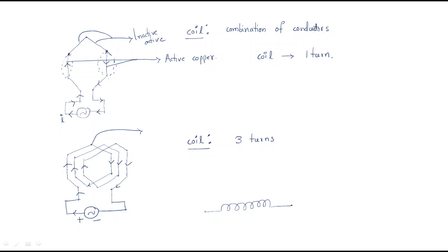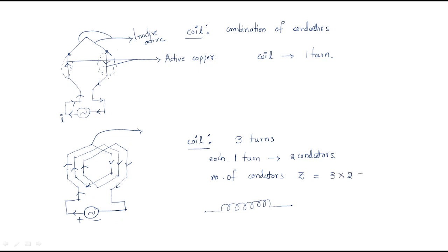How many conductors are available? One turn consists of two conductors. In this example, we have three turns. Starting from one turn — it has two conductors, the second turn has two conductors, and the third turn has two conductors. So the number of conductors, represented by Z, equals number of turns (3) multiplied by 2, giving six conductors.